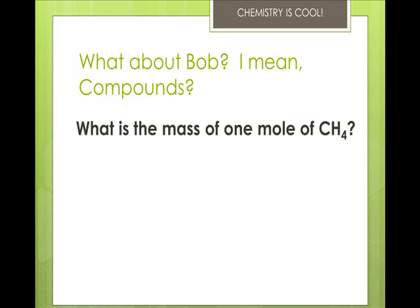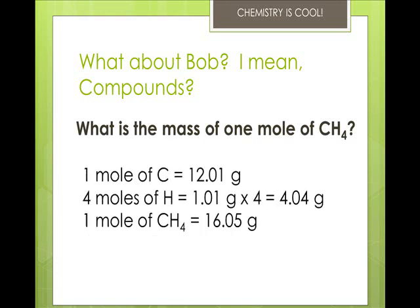So our question is, what is the mass of 1 mole of methane? Well, 1 mole of carbon is 12.01 grams. 4 moles of hydrogen are 1.01 times 4, so that gives us 4.04, and then we add those two together, we get 16.05 grams per mole of methane.